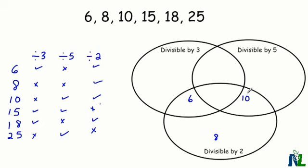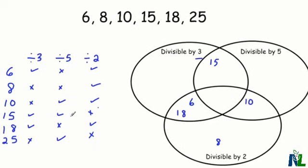Fifteen is divisible by three and five, so it's going to go in this overlap section. And eighteen is divisible by three and two, so it's going to go in this overlap section right here. Twenty-five is divisible by only five, so we are going to put that right here.